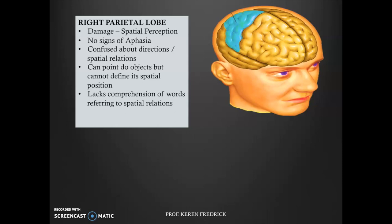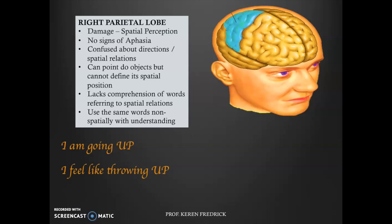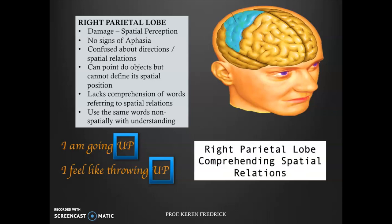She could not understand the meanings of spatial relation words — words like 'up,' 'down,' and 'under' that denote spatial relationships she was unable to comprehend. However, she was able to use the same words normally in a non-spatial way. For example, the word 'up' in 'I am going up' denotes a spatial direction — she struggled with that — whereas 'up' in 'I feel like throwing up' has nothing to do with spatial relationships, and she could use that normally. This confirms the right parietal lobe is reserved for comprehending spatial relationships.